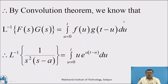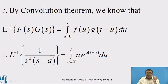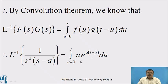By the Convolution Theorem, L⁻¹{F(s)·G(s)} = ∫₀ᵗ f(u)·g(t−u) du. Therefore, L⁻¹{1/(s²·(s−a))} = ∫₀ᵗ u · e^(a(t−u)) du, by replacing t with u in f(t) and t with (t−u) in g(t).